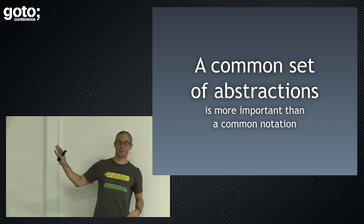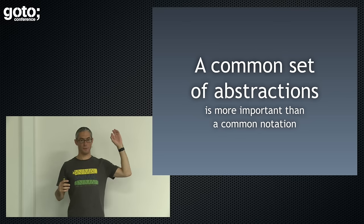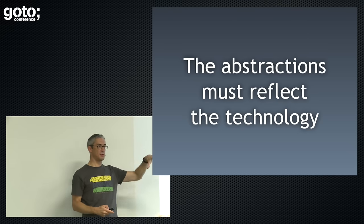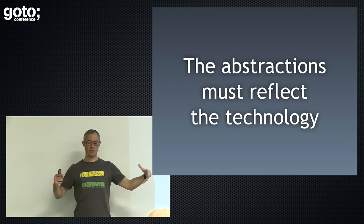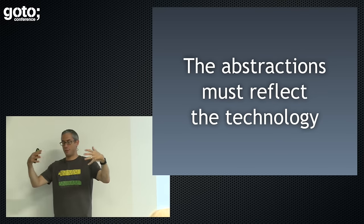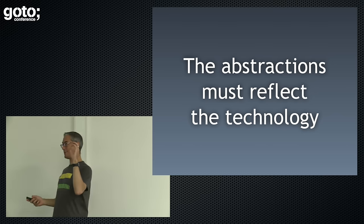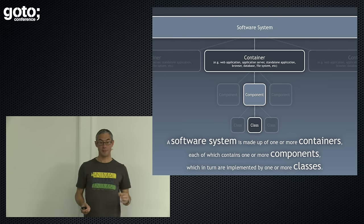UML tried to do too much — it was a standard notation and a standard set of abstractions, and it kind of failed on both counts. For where we are currently in the industry, we need a standard set of abstractions. I would like to get to something like electrical engineering — a standard set of symbols to represent things. But let's get the language nailed first. The language we create needs to reflect the technology we're using, merging the logical and development views back together so we have real terminology that maps to real technology.